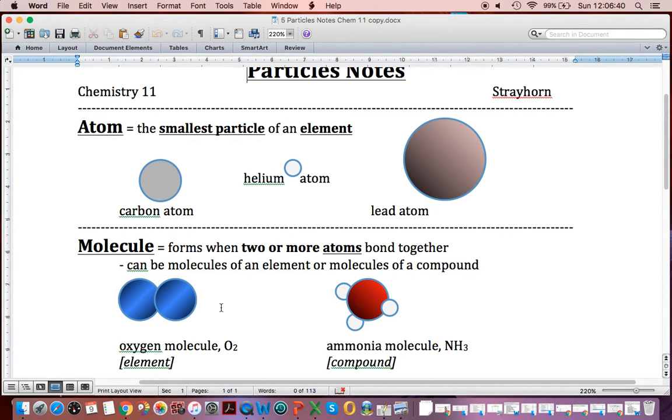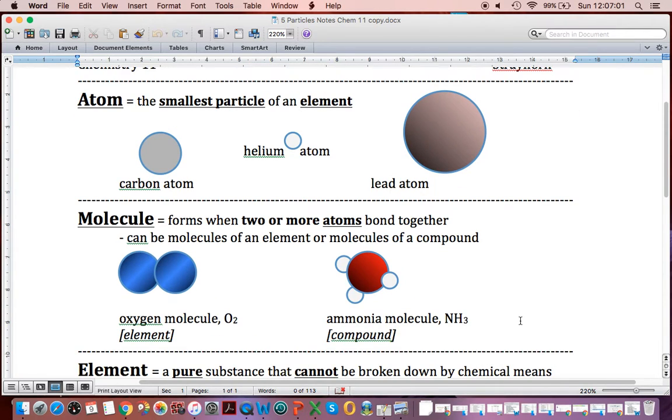Sulfur, if you had S8, eight atoms of sulfur forming a ring, that would be a molecule of sulfur. But we can also have molecules of compounds. And here we have ammonia, NH3, so three hydrogens on one nitrogen. When we have ionic compounds, technically we shouldn't call them molecules, although your textbook will from time to time.